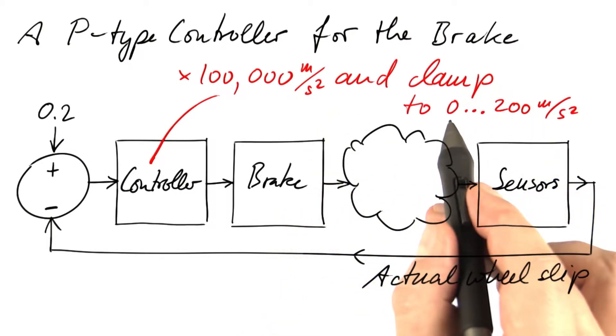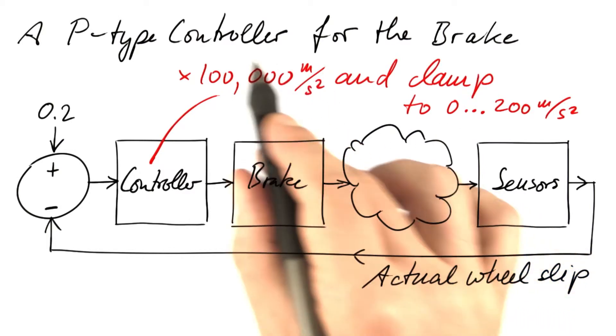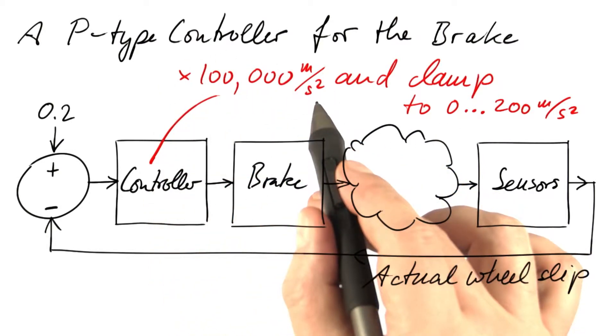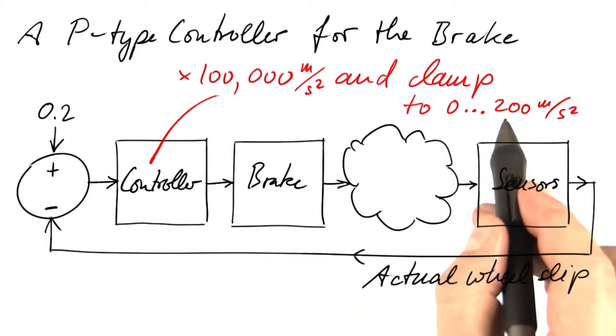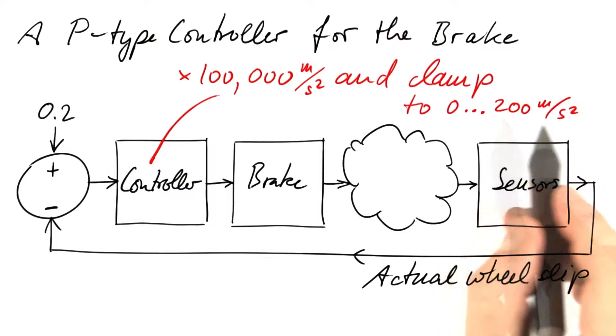Whenever the result of that multiplication is negative, we return zero instead. Whenever the result is larger than 200 meters per second squared, we return 200 meters per second squared.